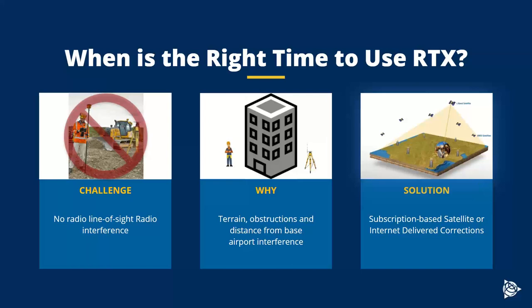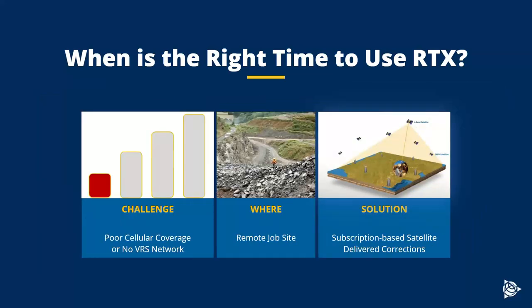A satellite-delivered correction like RTX, delivered on the same L-band spectrum that GNSS and GPS use, will help mitigate a lot of these issues. Internet-based corrections via VRS are certainly a suitable solution where available, but if not, RTX can also be used. A third challenge is poor cellular coverage or lack of a VRS network. A primary requirement for VRS is internet connectivity, and the region must have a VRS network to begin with. If you're on a remote job site where cellular connectivity may not exist and more than likely a VRS network may not exist, you can get corrections via satellite and achieve high accuracy positioning.